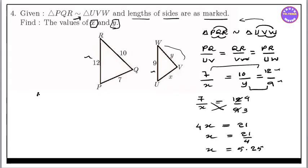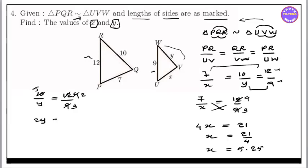Now for y: 10 by y equal to 12 by 9. Using the same cross-multiplication — 10 times 9 equals 12 times y — so y equals 90 by 12, which simplifies to 7.5. So y equals 7.5.